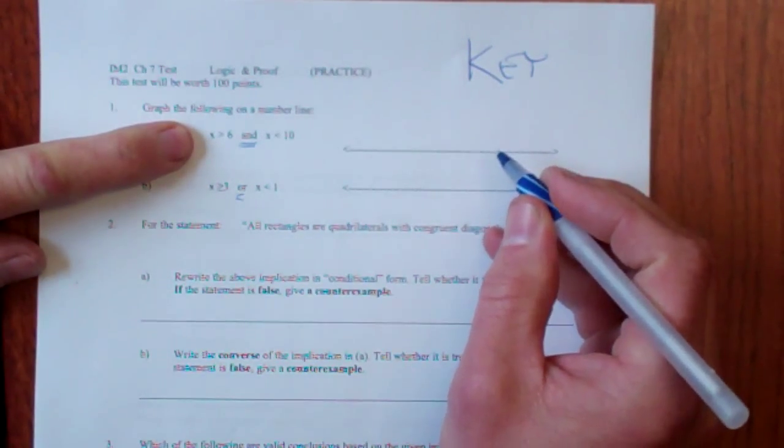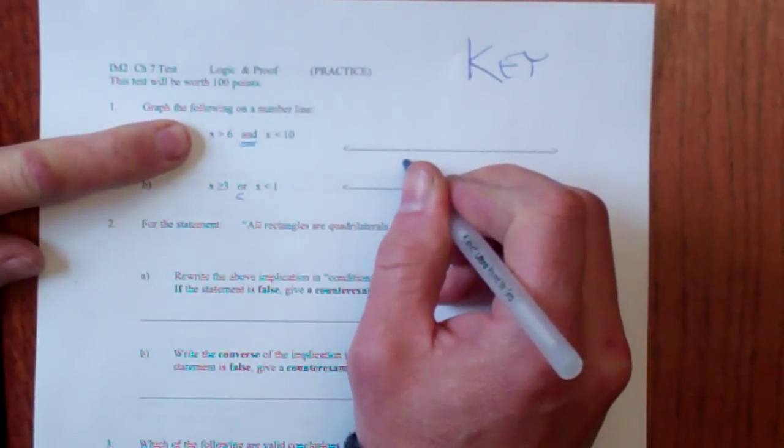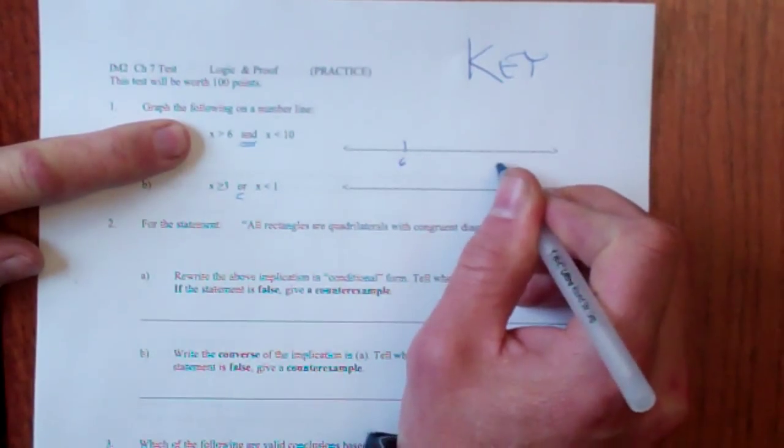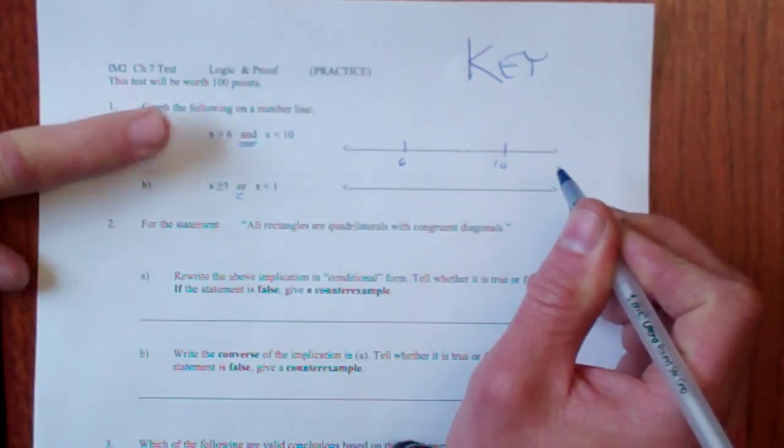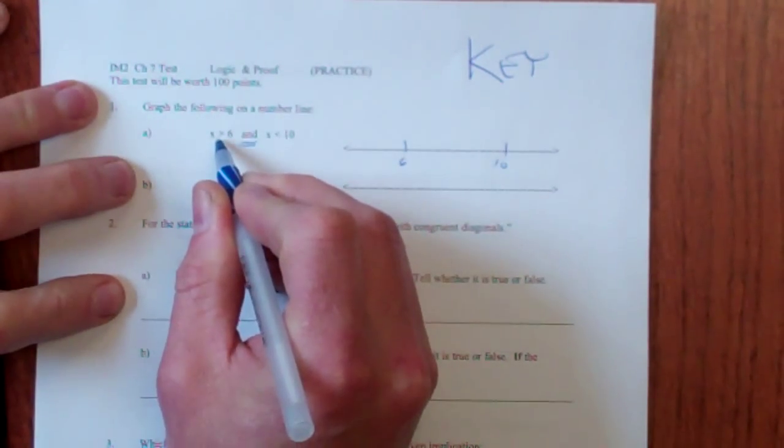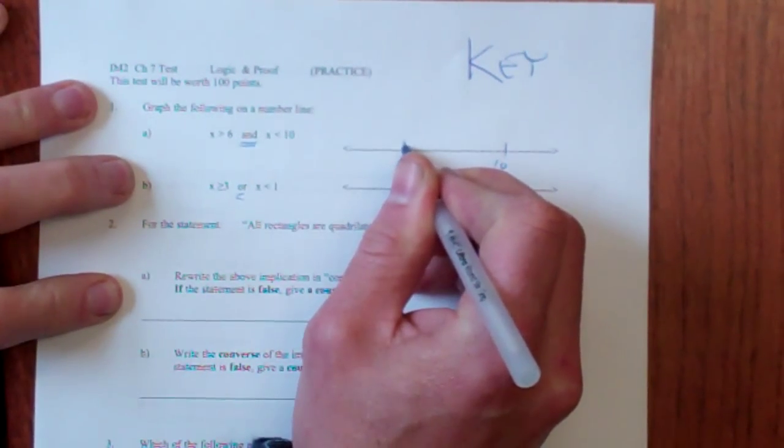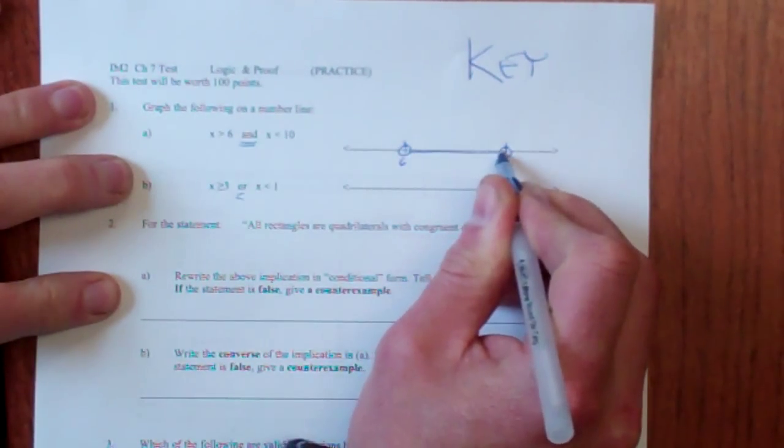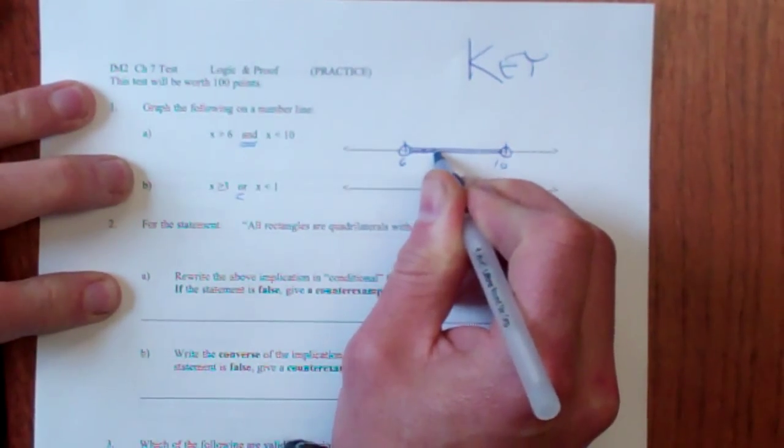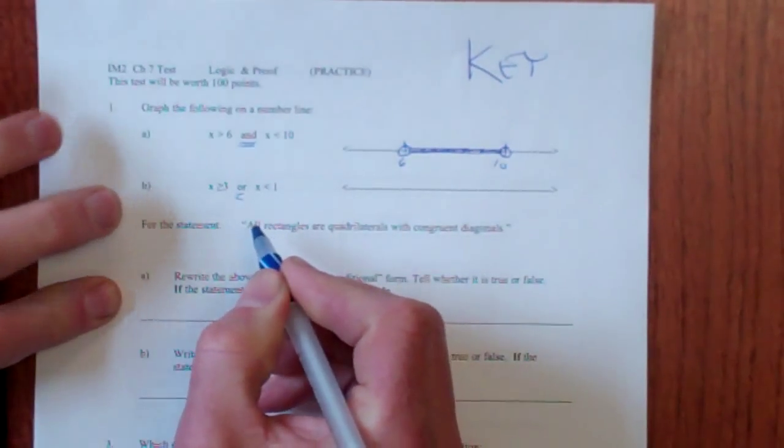X must be greater than 6 and less than 10. So here's going to be 6, there's going to be 10. You don't have to get too fancy about it. They're less than or greater than, so I'm going to circle that, circle that, and then just shade in between. Open circles unless it's equal to.